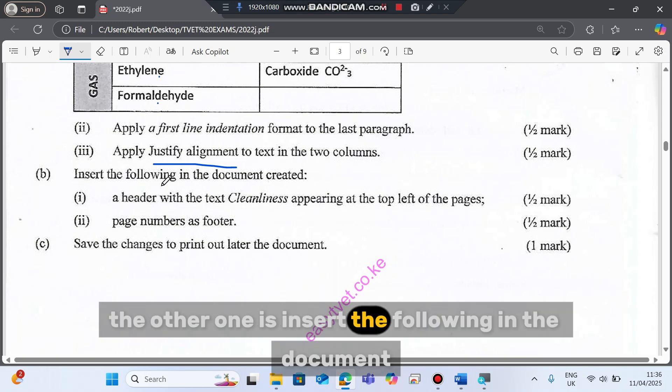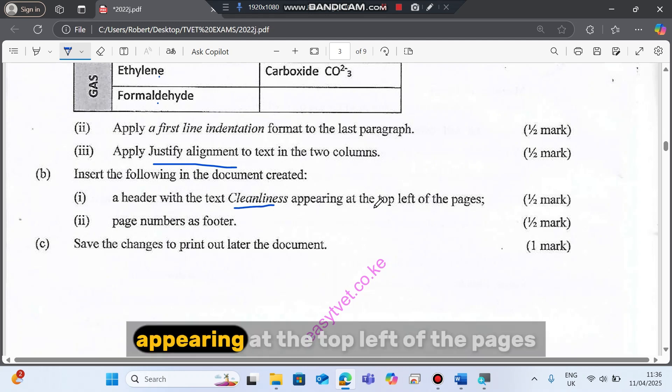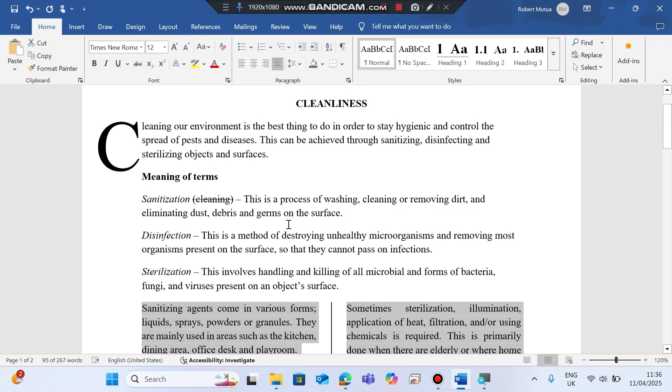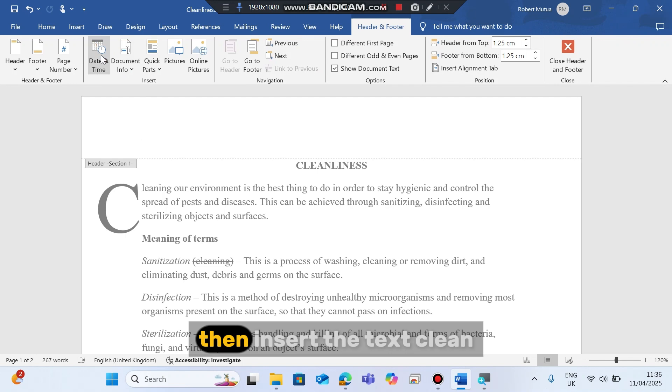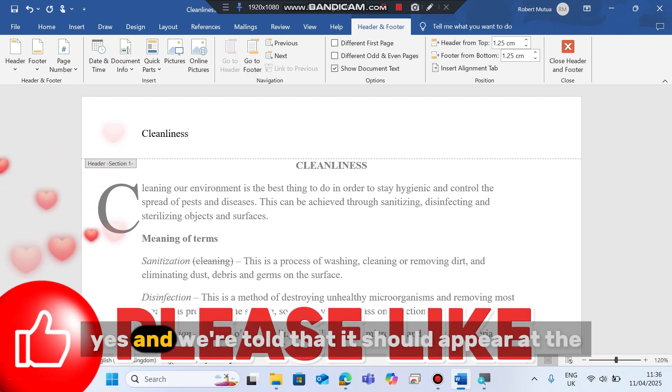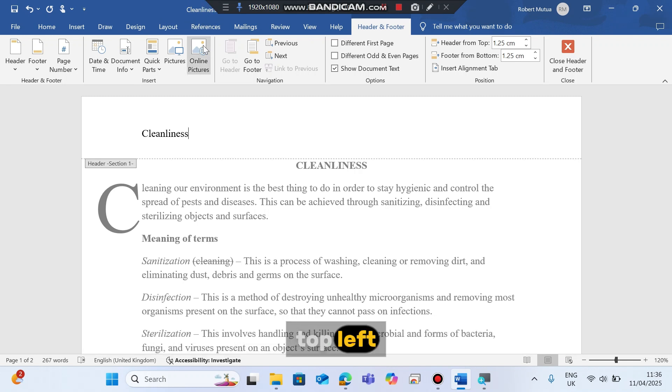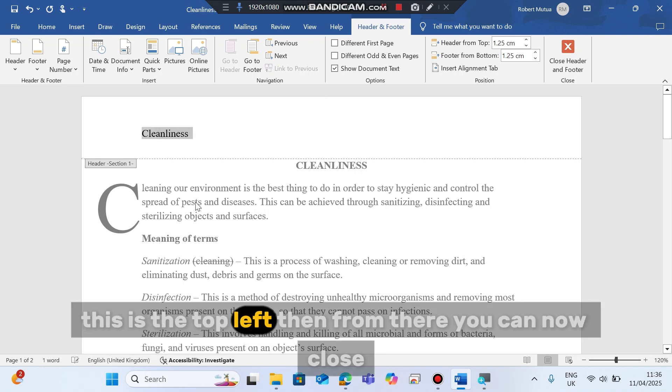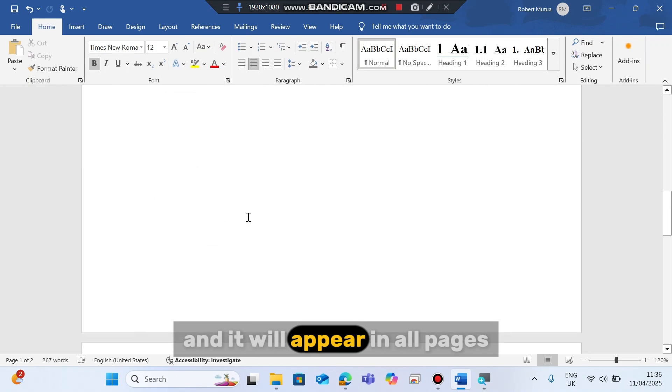Now the other one is insert the following in the document created: a header with the text cleanliness appearing at the top left of the pages. So to insert a header, you can even double click the header, then insert the text cleanliness. We're told that it should appear at the top left. Then from there you can now close, and it will appear in all pages.